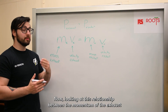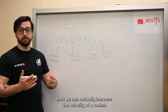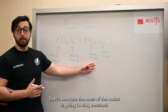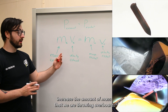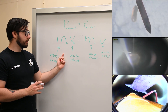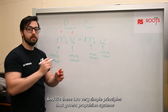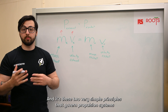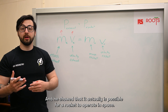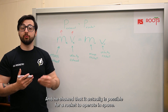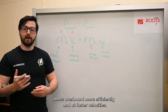Looking at this relationship between the momentum of the exhaust and the momentum of the rocket, we can deduce that there are two ways to actually increase the velocity of a rocket, since the mass of the rocket stays constant at an instantaneous point. We can either increase the amount of mass that we are throwing overboard, or we can increase the velocity at which we throw that mass overboard. It's these two very simple principles that govern propulsion systems — and fundamentally, that's what Goddard described in his paper. He showed that it actually is possible for a rocket to operate in space, and the rest is just figuring out how we can throw mass overboard more efficiently and at faster velocities.